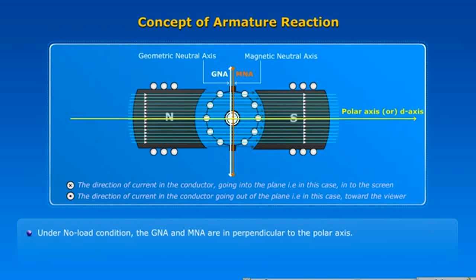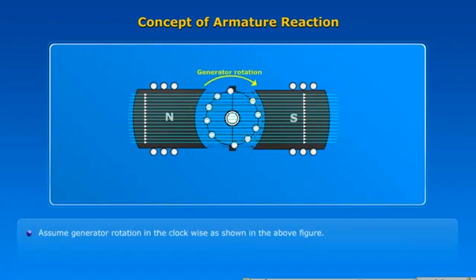Under no-load condition, the GNA and MNA are perpendicular to the polar axis. Assume generator rotation in the clockwise direction as shown in the above figure.